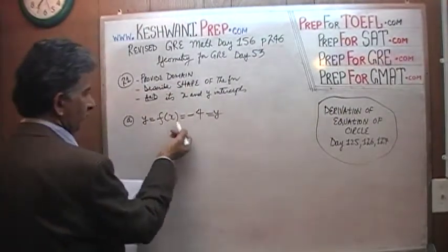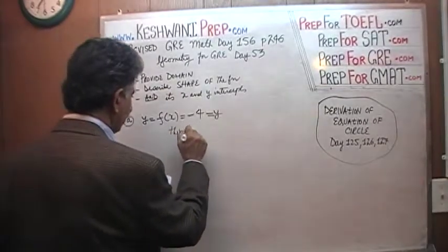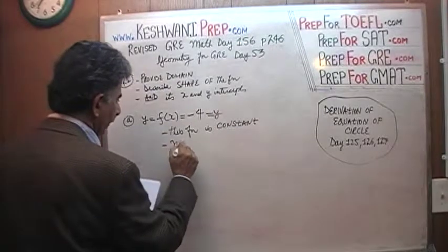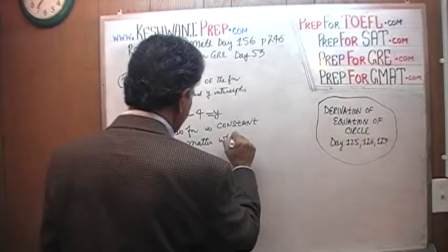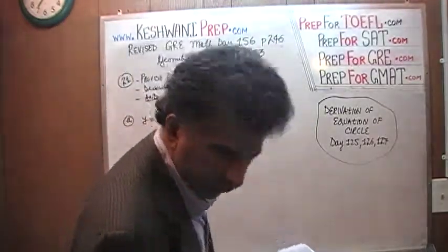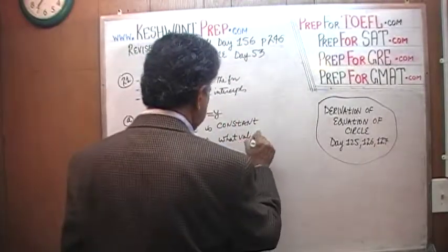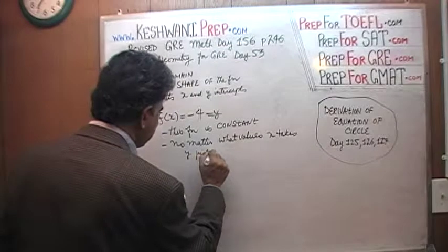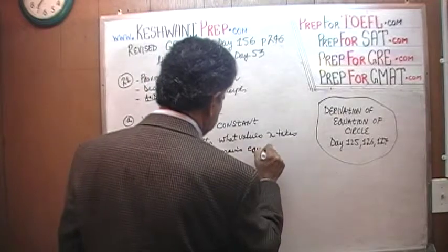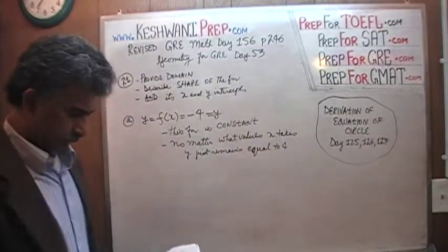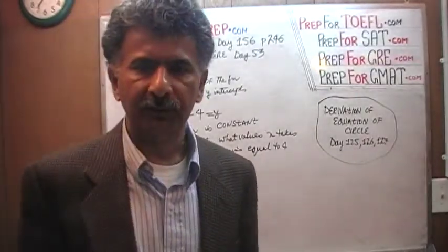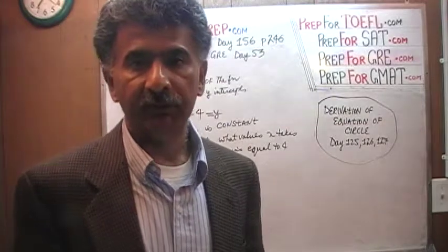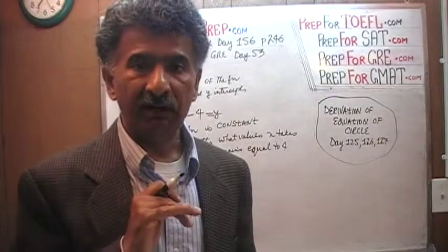So this function — Y equals F of X, which is negative four — as you can tell, this function is constant. No matter what values X takes, Y just remains equal to 4. You ask me: what's the value of Y when X is 2? It's 4. When X is 10? It's 4. When X is 37? It's 4. When X is negative 35? It's 4. When X is negative three-quarters? It's 4. Y never changes — the value of Y is always the same.